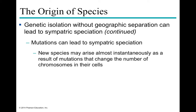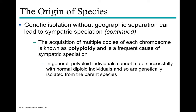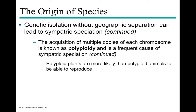Sympatric speciation can also arise almost instantaneously through mutation events that change the number of chromosomes in a cell — a condition called polyploidy. Polyploid individuals cannot mate with diploid individuals, creating immediate genetic isolation from the parental species. Polyploidy is more common and viable in plants than in animals. Examples include strawberries and kiwis, which are polyploid — meaning they have more chromosomes in their cells than most other organisms.